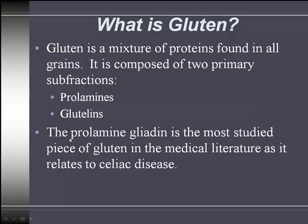There is a particular type of prolamine found in wheat called gliadin, and this is the prolamine — the piece of gluten — that is most associated with the development of celiac disease.